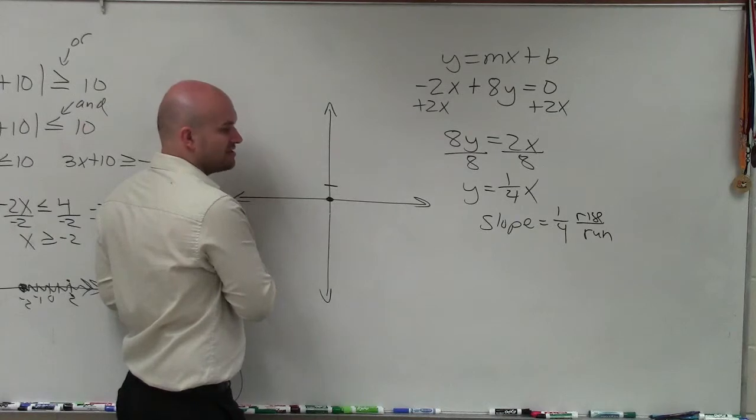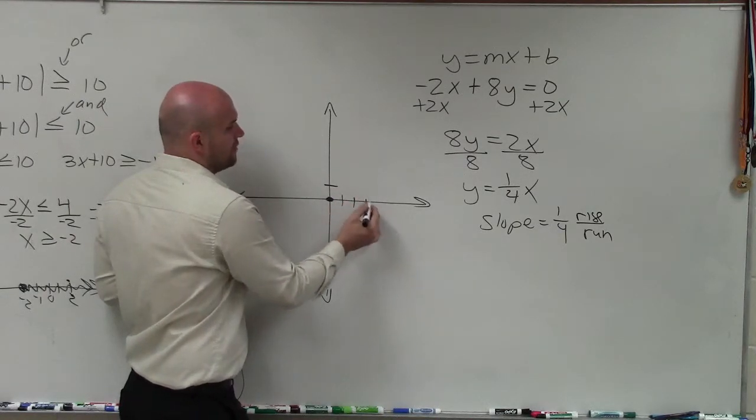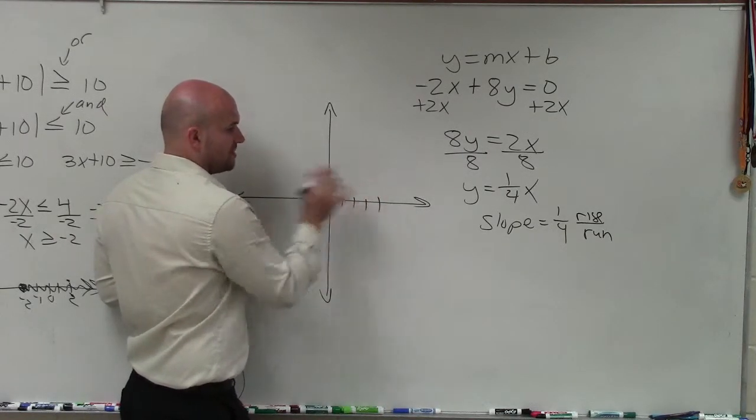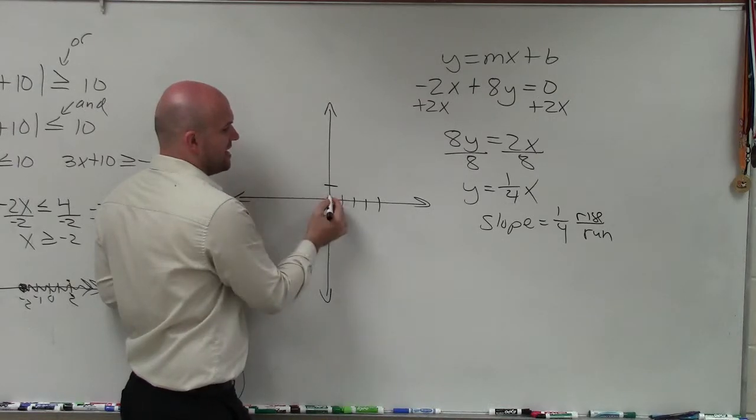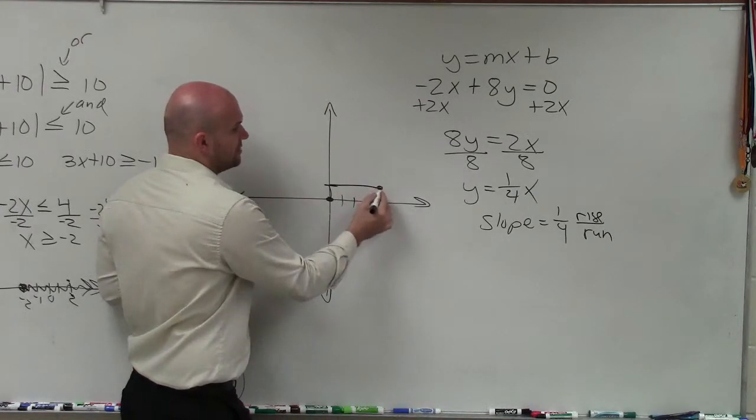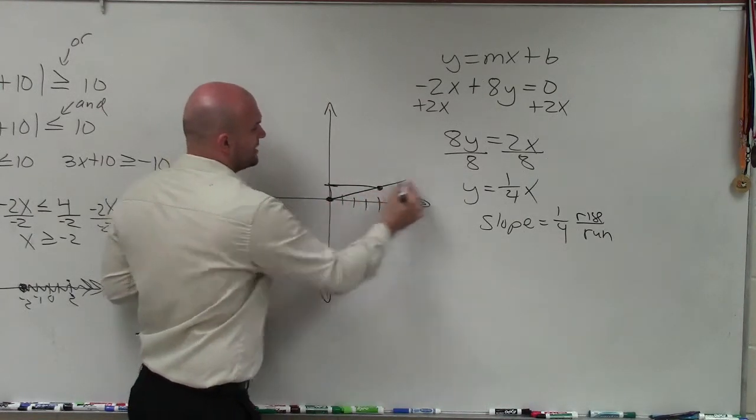And since the change in the x values is positive 4, I'm going to go over 4 units for my x values. Then I just follow my slope triangle up 1 over 4, and I connect those two points.